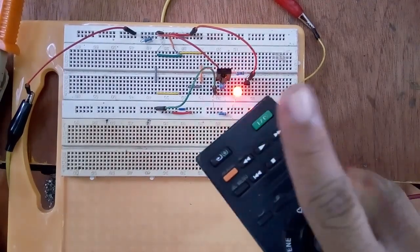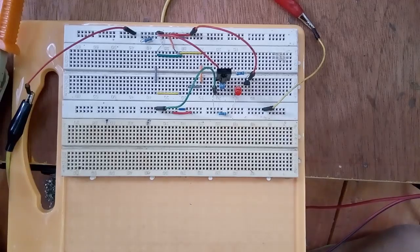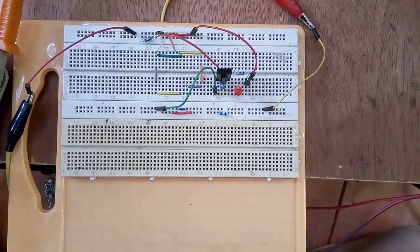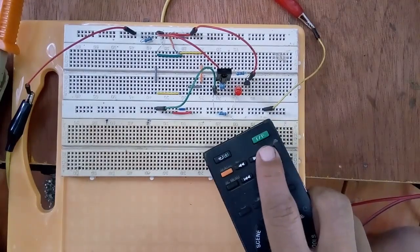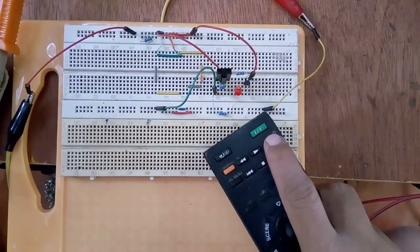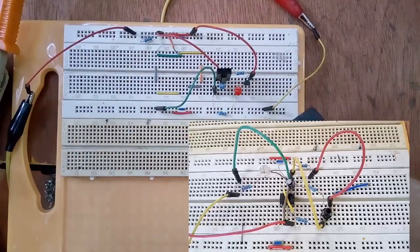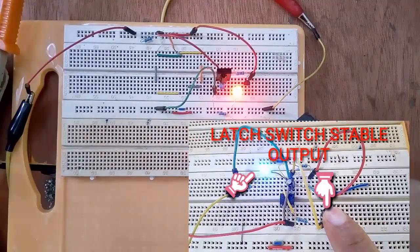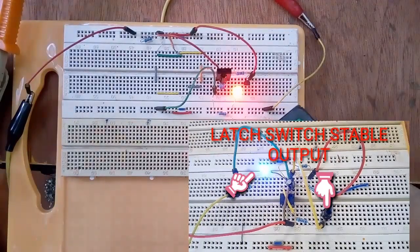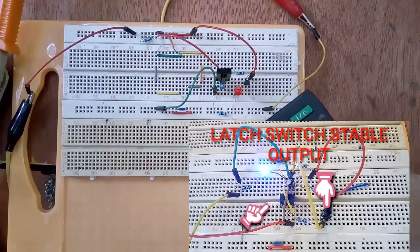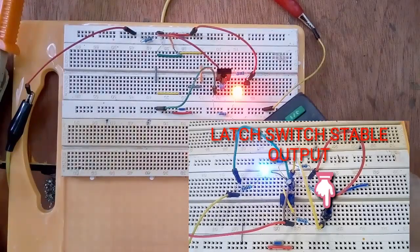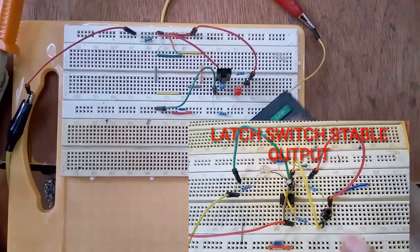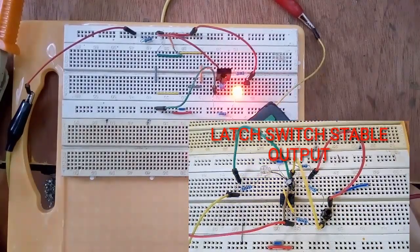To make the output stable, this circuit must be connected to the latching switch circuit. When I press the momentary switch, the LED is glowing permanently unless I press again the momentary switch, then the LED is off.